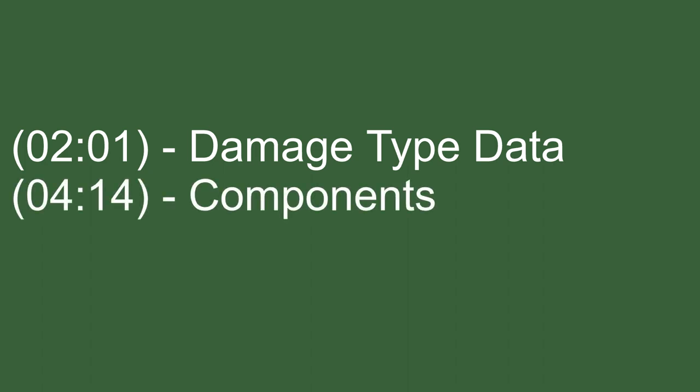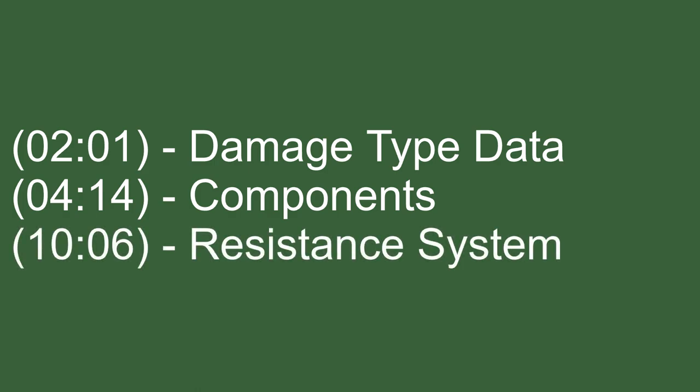For step two we'll be creating the actual components as well as modifying older ones — for example the DealDamage component will now store the damage type it's dealing as an ID integer. Then for step three we'll be creating the damage resistance system. Instead of subtracting damage we'll use multiplication, so 200% resistance means you take half the damage, 100% means normal damage, and 50% means you take double damage.